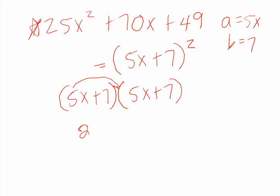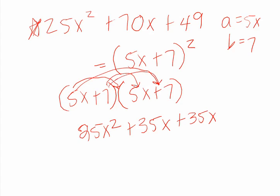25X squared - 5X times 5X. Then 5X times 7 is 35, so we get plus 35X plus 35X again. And then 7 times 7 is plus 49.